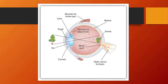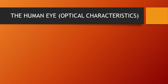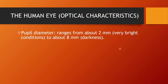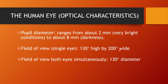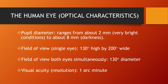The lens contributes 18 to 20 diopters and the cornea 40 diopters; the distance from behind the lens to the retina is approximately 17 millimeters. The image formed is inverted: right becomes left, left becomes right, up becomes down. Human optical characteristics include a pupil diameter ranging from 2 mm in bright light to 8 mm; field of view in one eye is 130 degrees vertically and 200 degrees horizontally, and visual acuity is measured as 6/6.